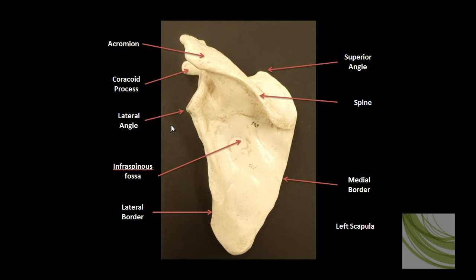This pointed area is the lateral angle. This is the infraspinous fossa, a point of attachment for a muscle. Here is the lateral border and the medial border. This is the spine of the scapula, which leads into the acromion process.